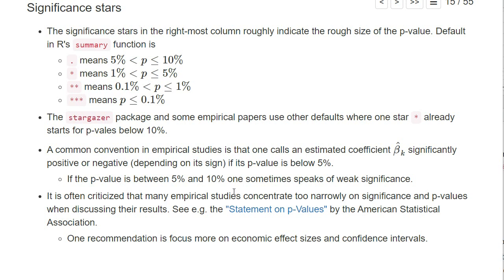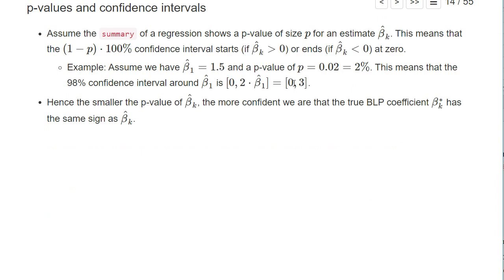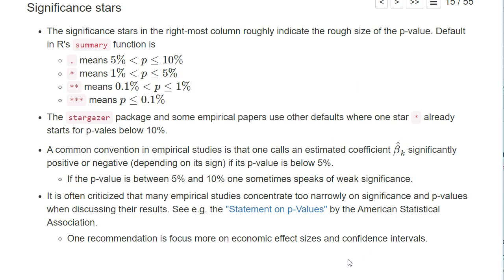There are also other problems with p-values. The American Statistical Association has put out a statement on p-values where they discuss these problems. They say one should focus more strongly on effect sizes and confidence intervals. There's no particular reason why you should focus so much on zero. The p-value basically gives us the information about the confidence interval that would start or end at zero. But why should we be so strongly focused on zero? Quoting the confidence intervals may be much more informative.